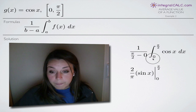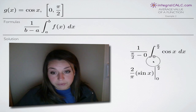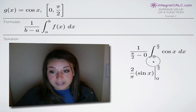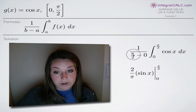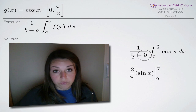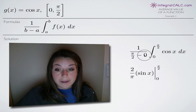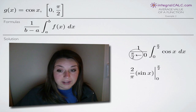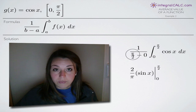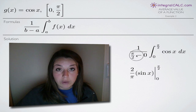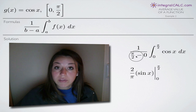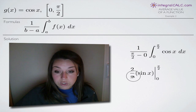Then we simplify the fraction and integrate. When we simplify the fraction out front, pi over two minus zero is pi over two. Whenever you have one divided by a fraction, the result is the inverse of that fraction. So instead of one divided by pi over two, we end up with two over pi out in front.